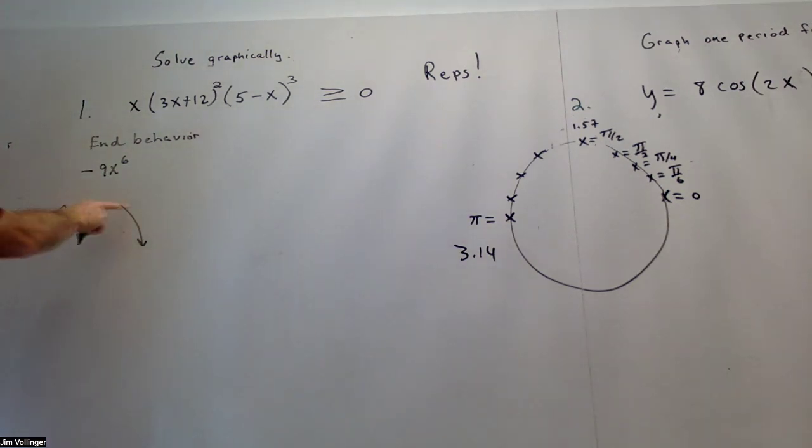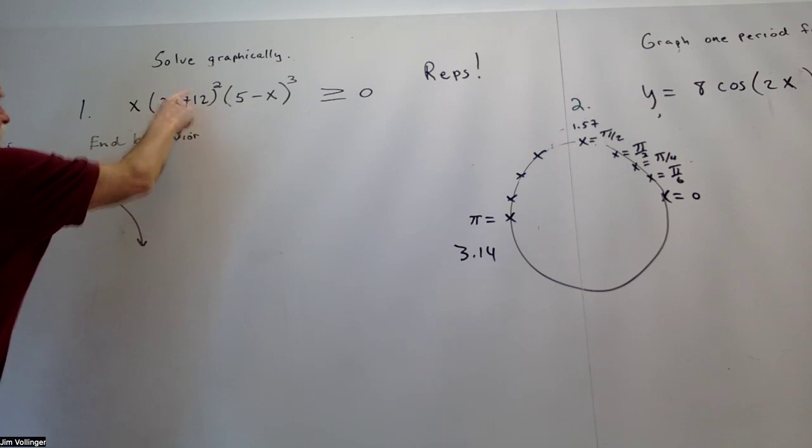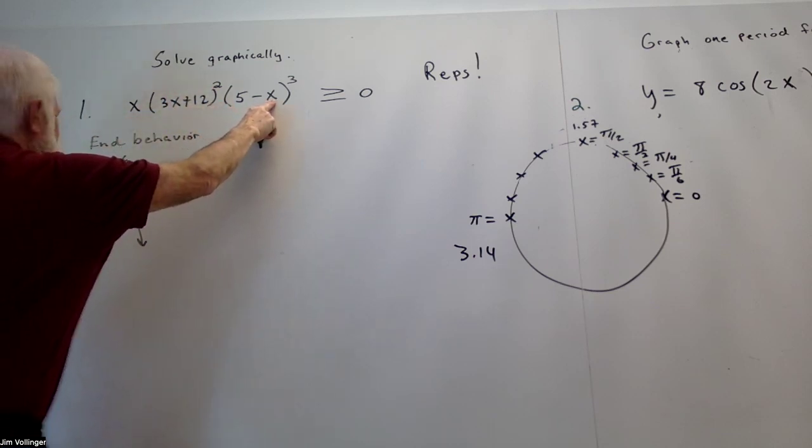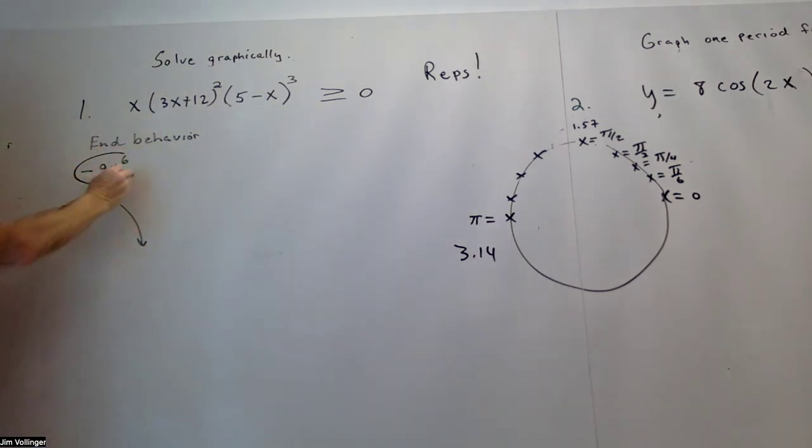All right, so I decided to look at the end behavior first, which is x times, I'm going to square the 3, so 9x squared times x, 9x to the third, times minus x to the third gives me that. And that term is the most important term when we start putting big numbers into the polynomial if we were to multiply it out. So minus 9x to the sixth, right, even exponent. So end behavior should look like that.